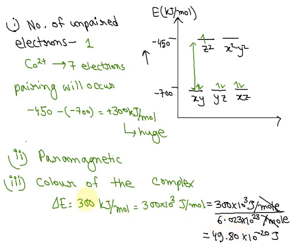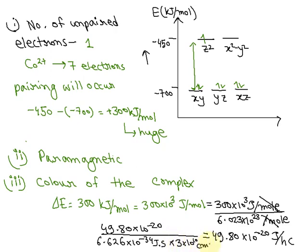To convert this into wavenumber (cm⁻¹), we divide by hc. So 49.80 × 10⁻²⁰ divided by 6.626 × 10⁻³⁴ (Planck's constant in joule·seconds) times 3 × 10¹⁰ centimeters per second (velocity of light in CGS units). The seconds and joules cancel out, giving 275,610 cm⁻¹.